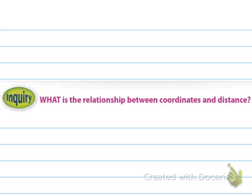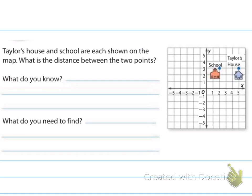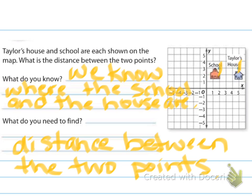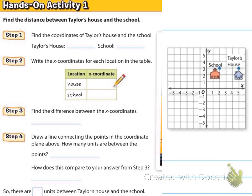So what is the relationship between coordinates and distance? Looking at this first example, it says Taylor's house and school are each shown on the map — what is the distance between the two points? We know the points for Taylor's house and for the school. Step one says find the coordinates: for Taylor's house, we go over to five and up to three on the coordinate plane, so our ordered pair is five comma three.